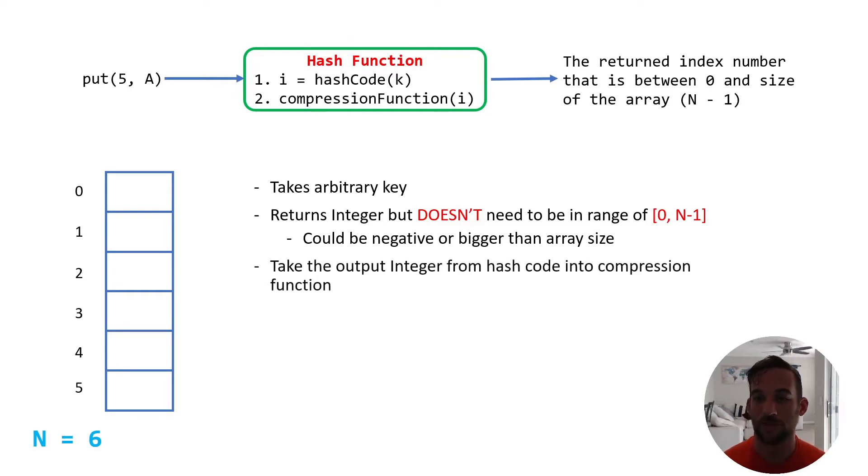So that's where the compression function comes in. We take the output integer from the hash code, so the integer, the variable i, we insert that into the compression function, and all that does is it now converts, makes sure that that integer value is in the range of the array. So here it would be 0 and 5. So it's going to be in the range of 0 and 5.